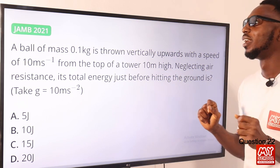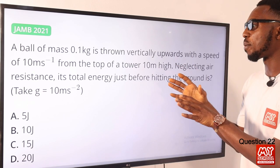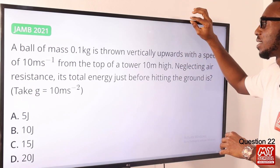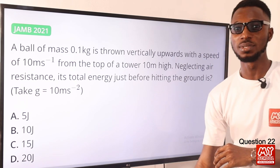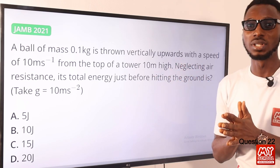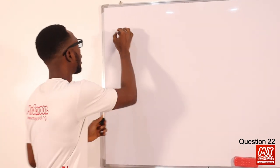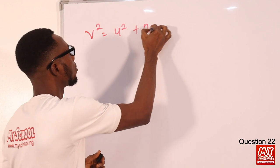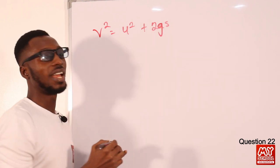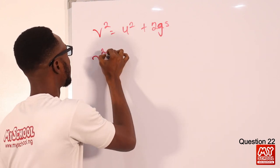Question 22: a ball of mass 0.1 kg is thrown vertically upwards with a speed of 10 m/s from the top of a tower that is 10 meters high. Neglecting air resistance, its total energy just before hitting the ground is what? We use v² = u² + 2as. Since the ball is thrown upward against gravity, this becomes v² = u² − 2gs.